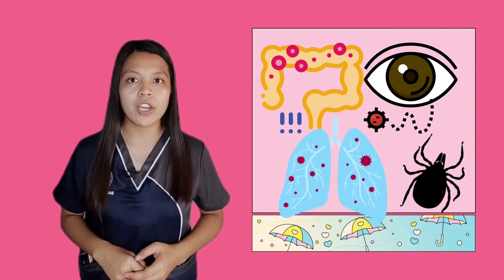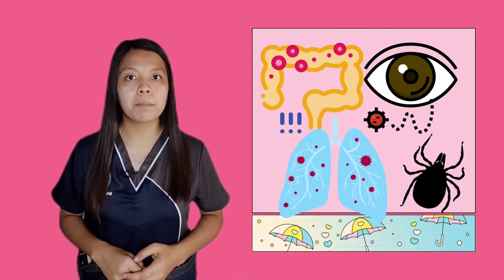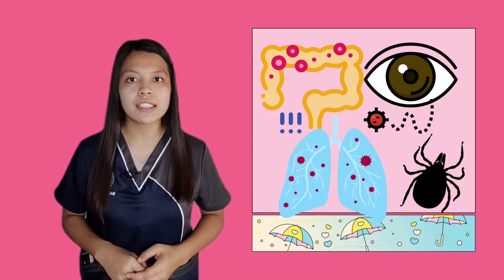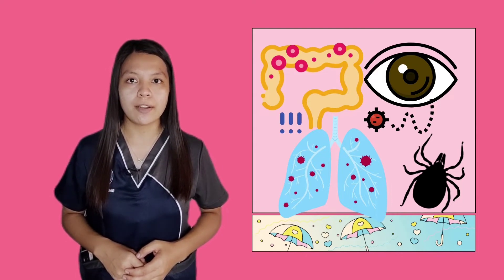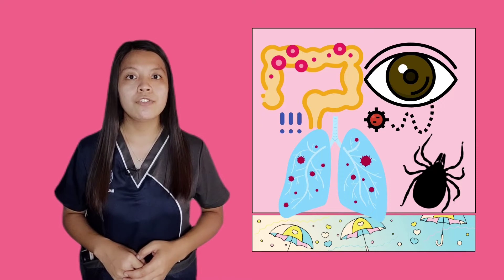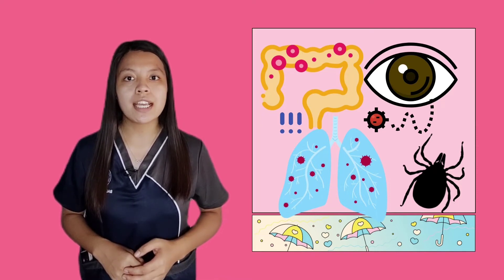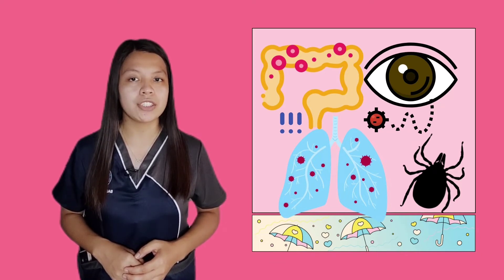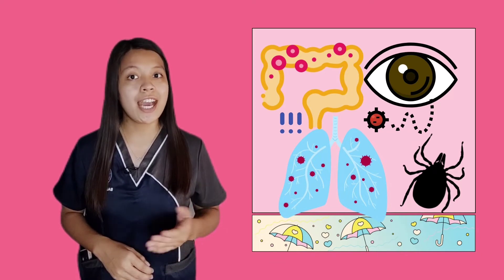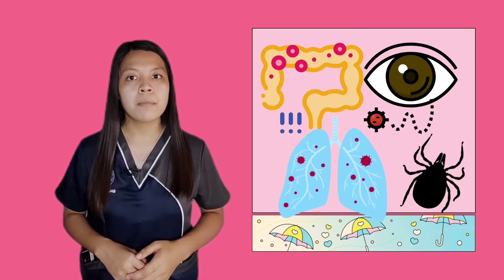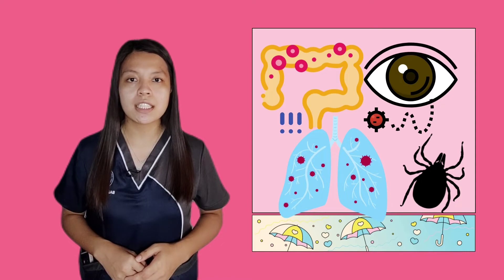Tetracycline is employed in the treatment of infections brought by bacteria, such as pneumonia and other diseases affecting the respiratory tract. Infections of the skin, eyes, lymphatic system, intestinal tract, genital system, and urinary system are some of the examples. On the other hand, there are also diseases that can be transmitted from animals to humans by ticks, mites, and other parasites.